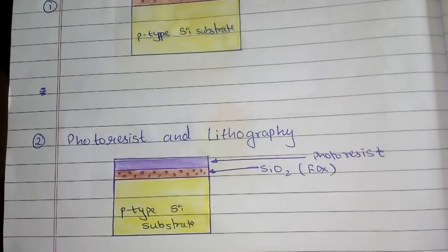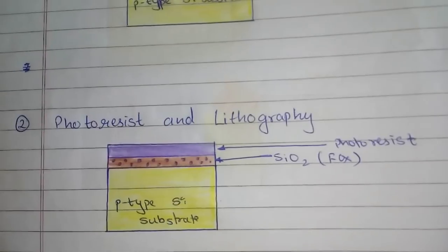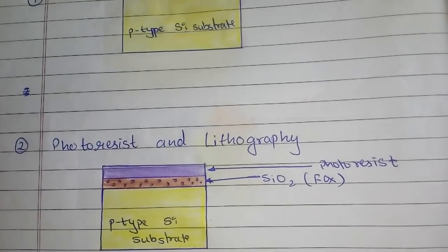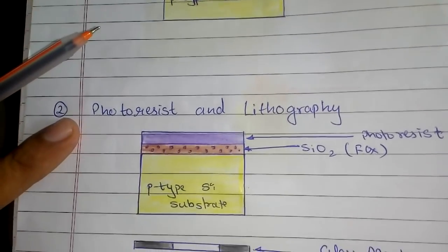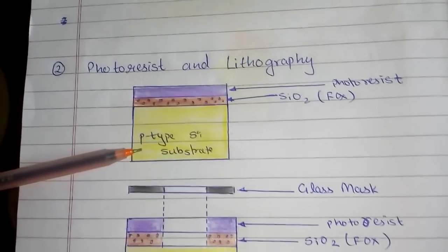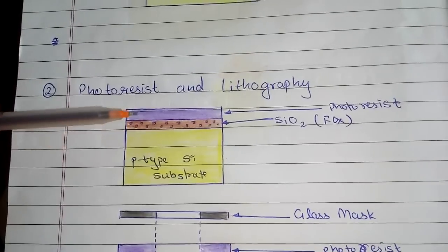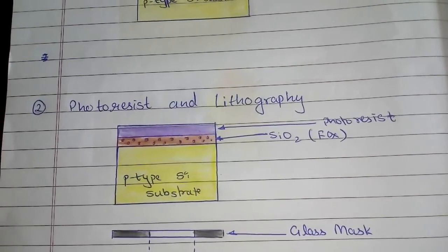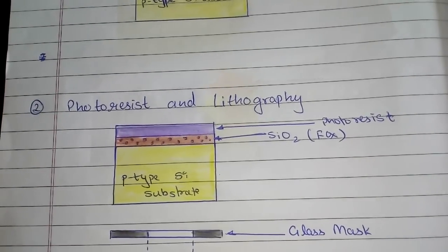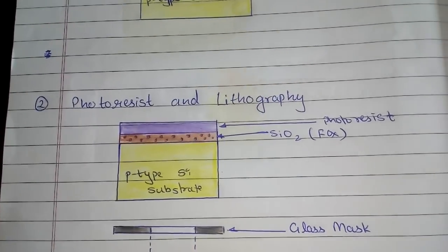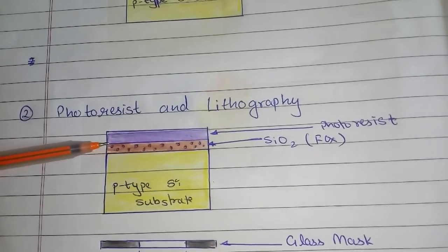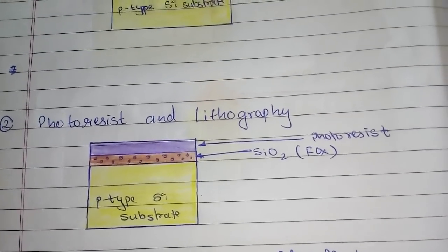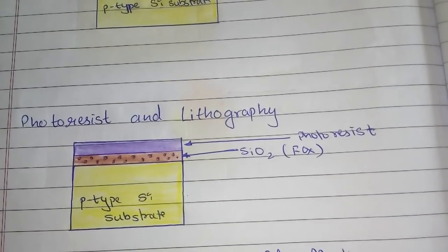The next step is photoresist and lithography. Photoresist is a light-sensitive and acid-resistant inorganic polymer whose properties change on exposure to UV light. It is of two types: positive photoresist, which is initially insoluble in solvent but becomes soluble when exposed to UV light; and negative photoresist, which is initially soluble but becomes insoluble when exposed to UV light.